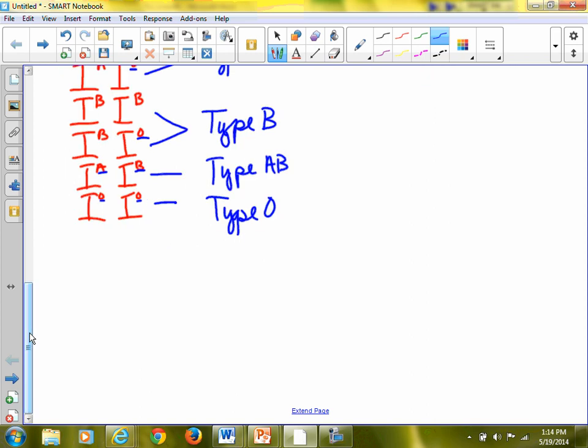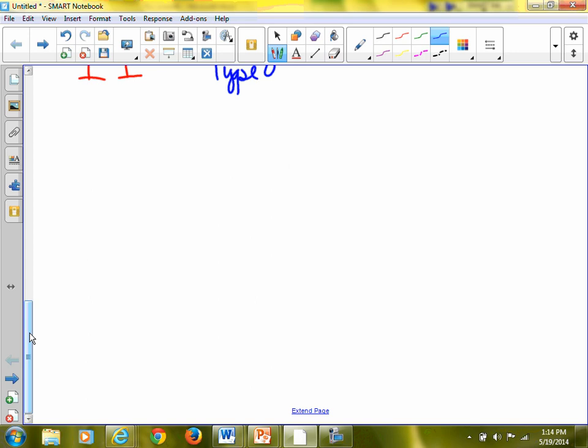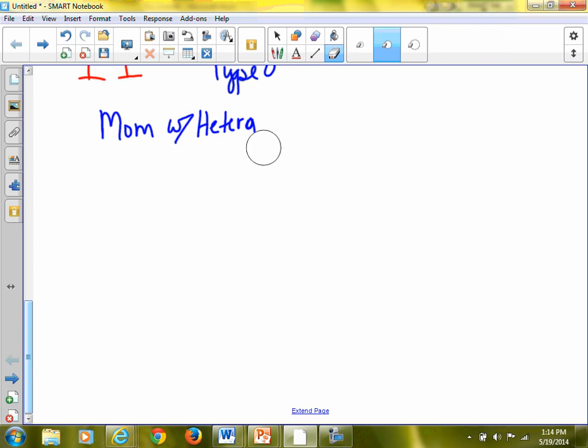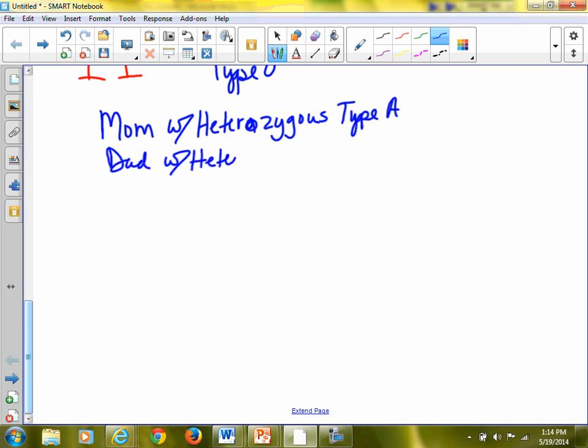Now we can have our type O blood type. Alright. So let's do a problem where we're going to practice using that information. You can rewind back. Or hopefully you have that in your notes anyway. But let's say you have for blood type. Let's say a mom with heterozygous type A.